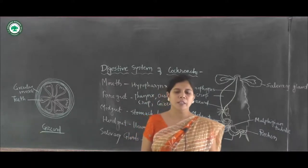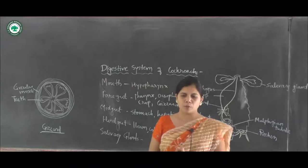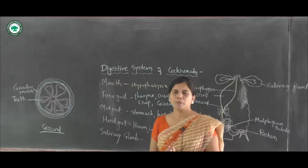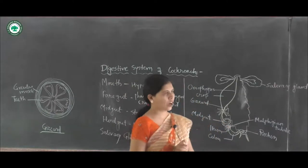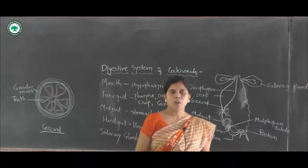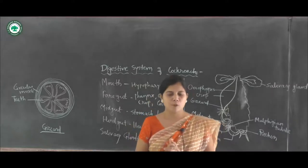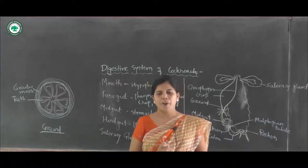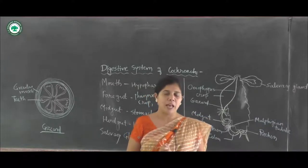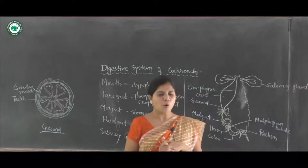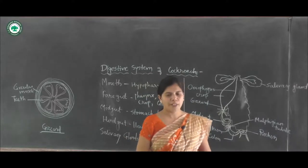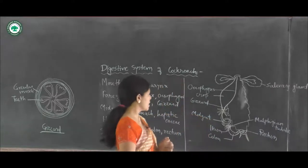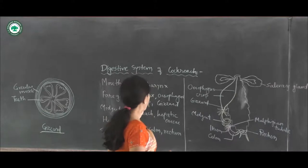First, let us discuss the mouth parts of the cockroach. The mouth or pre-oral chamber is a narrow space bounded by the mouth parts. The hypopharynx is present at the center of the mouth, and the salivary duct opens at the base of the hypopharynx. The mouth opens into the foregut.